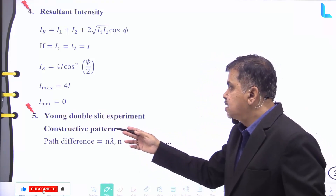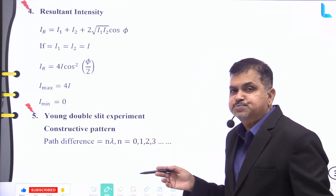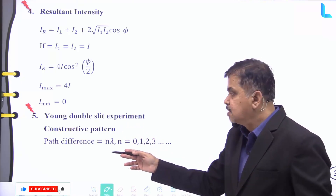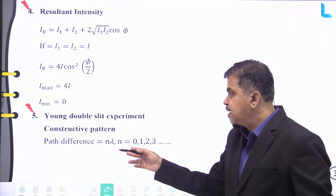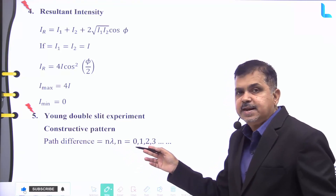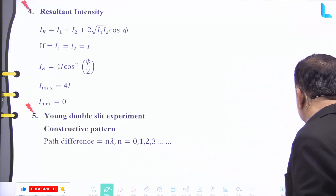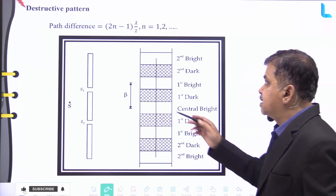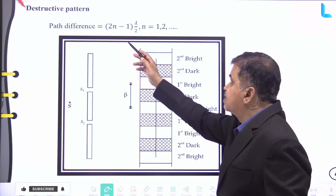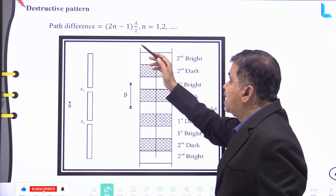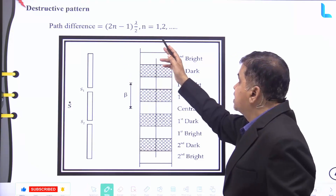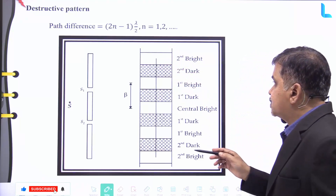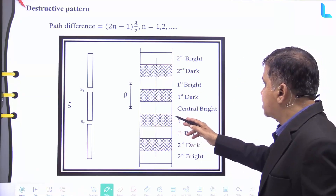In Young's double slit experiment, for the constructive pattern the path difference is nλ, where n = 0, 1, 2, 3, and so on. For a destructive pattern, the path difference is (2n − 1)λ/2, where n = 1, 2, 3, and so on.